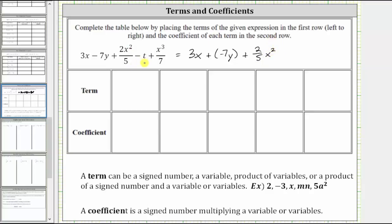Then we have minus t. Let's write minus t as plus negative t. And then we have plus x to the third divided by seven. We could write x to the third as one times x to the third. Once you recognize this, we can write this term as one seventh times x cubed, or just one seventh x cubed. So multiplying by one seventh is equivalent to dividing by seven. Having the expression in this form makes it much easier to identify the terms and the coefficients.